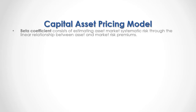The beta coefficient consists of estimating asset market systematic risk through the linear relationship between asset and market risk premiums. As a formula, asset beta equals the covariance between asset and market risk premiums divided by the variance of the market risk premiums.